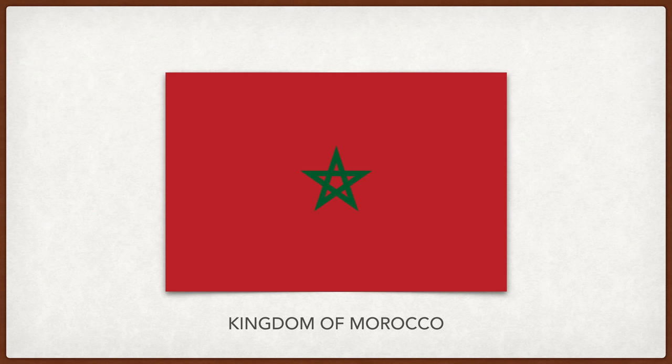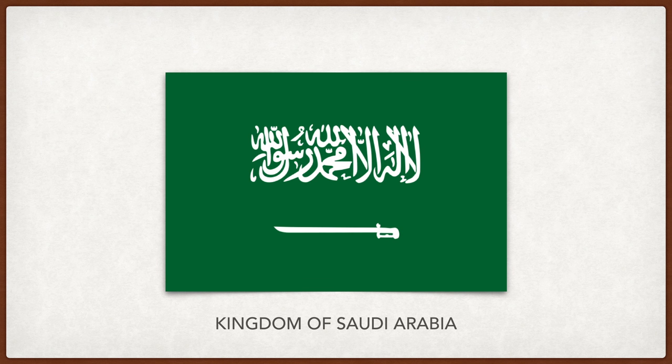Morocco. The red represents the royal family being descendants from Muhammad the prophet through his daughter Fatima. Besides this, it represents bravery and strength, while the green represents love, joy, and hope, and Islam. Saudi Arabia. The Islamic declaration of faith in Arabic is inscribed on the flag — 'there is no God but Allah, and Muhammad is his messenger.' Below that is a sword, which represents strictness in applying justice.